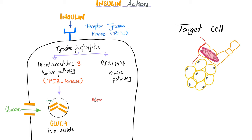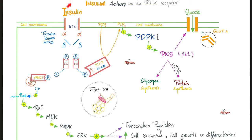Remember the insulin story? Insulin acts on its receptor, which was a receptor tyrosine kinase. It had intrinsic tyrosine kinase activity — like a strong independent woman who doesn't need help from anyone. Insulin works on the receptor through RAS, RAF, and MEK/ERK, and the end result is transcription, translation, more growth and proliferation.